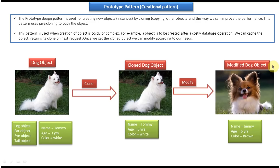So in this way we can improve the performance. The prototype design pattern is used for creating new objects by cloning other objects. This pattern uses Java cloning to copy the object. This pattern is used when creation of an object is costly or complex — for example, when an object is created after a costly database operation. We cache the object, return its clone on the next request, and modify it according to our needs, such as changing the dog's color to brown.